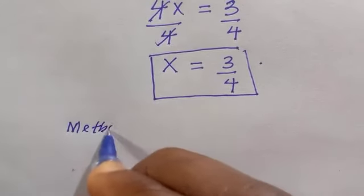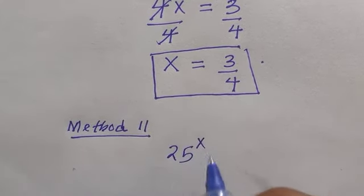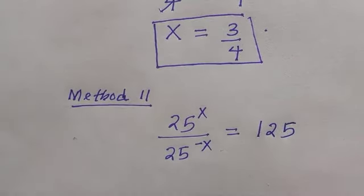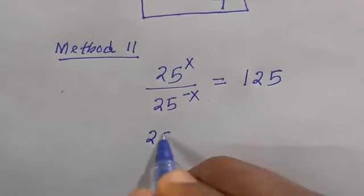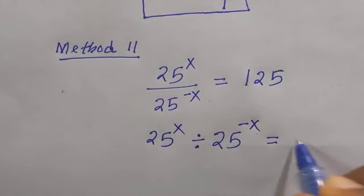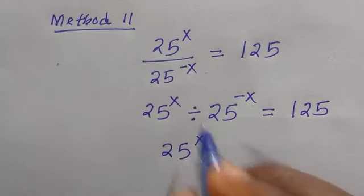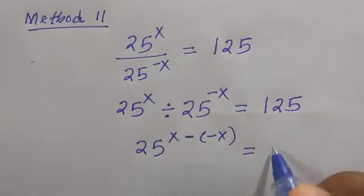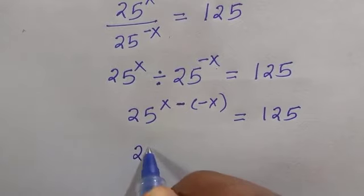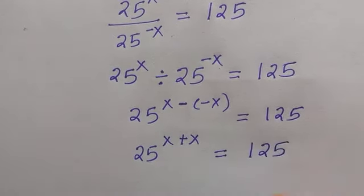Now let's see the second method. The problem is 25 raised to power x divided by 25 raised to power minus x equals 125. From the left-hand side, since they have the same base, division changes to subtraction of exponents. We get 25 raised to power x minus minus x, and minus times minus is plus, equals 125.